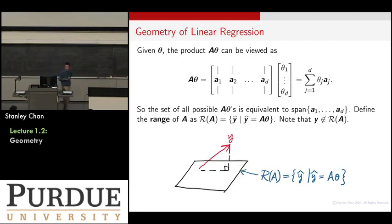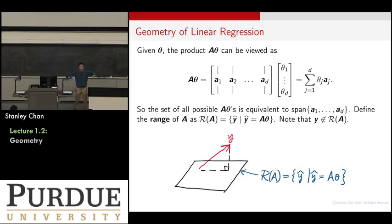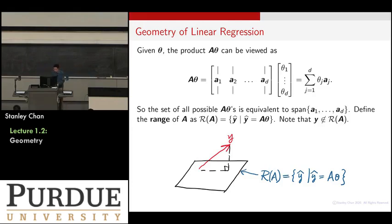The geometry of linear regression is as follows. Imagine there is a flat space, and in this space it contains all the A vectors you have. This space contains all the linear combinations of all the basis vectors — it's the span of your feature vectors.